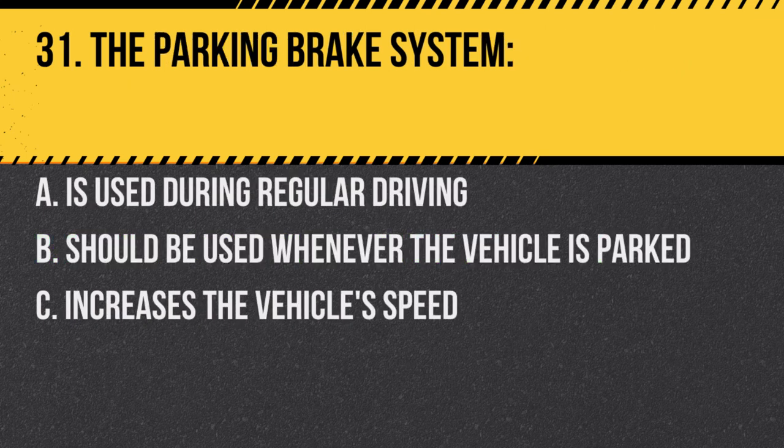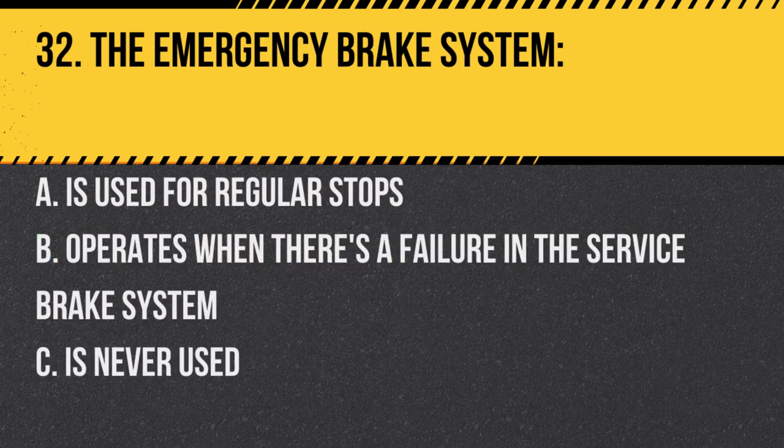Question 31. The parking brake system: A. Is used during regular driving. B. Should be used whenever the vehicle is parked. C. Increases the vehicle speed. Answer B. Should be used whenever the vehicle is parked. It ensures the vehicle remains stationary.